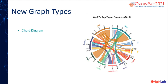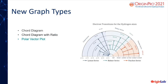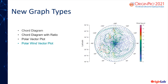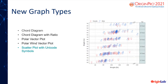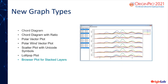New graph types in Origin 2021 include Core Diagram, Core Diagram with Ratio, Polar Vector Plot, Polar Wind Vector Plot, Scatter Plot with Unicode Symbols, Lollipop Plot, and Browser Plot for Stacked Layers.